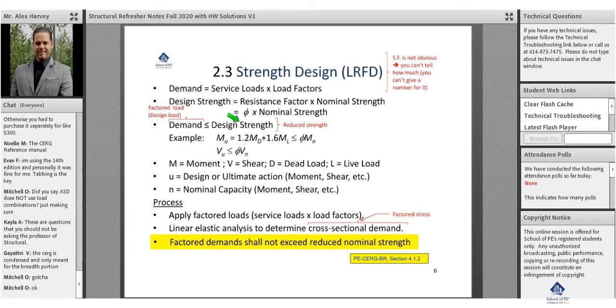And I'm going to reduce my strength on the capacity side. In LRFD, that reduction factor is represented by this symbol phi or φ. Anytime you see a phi, that represents my reduction factor in LRFD applied on the capacity side.